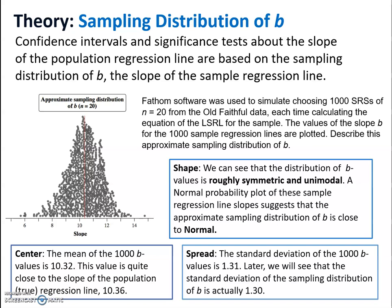A couple different things. The shape is going to be roughly symmetric, hopefully unimodal. A normal probability plot of the sample regression line slope suggests that it's approximately normal. The center is going to be what the true slope is. And then the spread, we will see later how that works out.